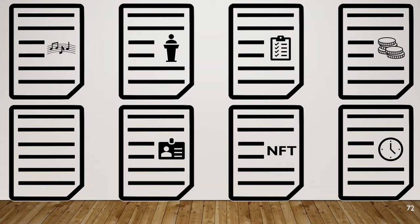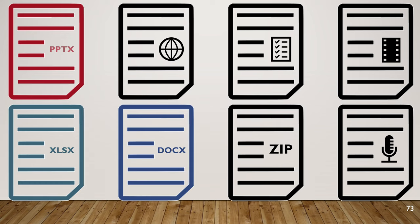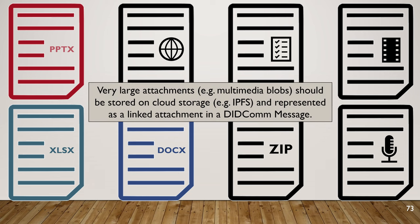Here are some different DIDCOM message attachment types that have been added to the DIDCOM notation: MDLs, NFTs, licenses, other driver's license types, office documents, web pages, zip files, multimedia files. Very large attachments and multimedia blobs should be stored in cloud storage and represented as a linked attachment in the DIDCOM message. That's layer three — all we've done is take what we learned in layers zero, one, and two to create DIDCOM messages and added the ability to have attachments.